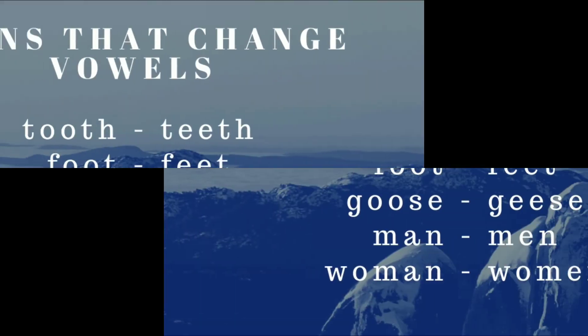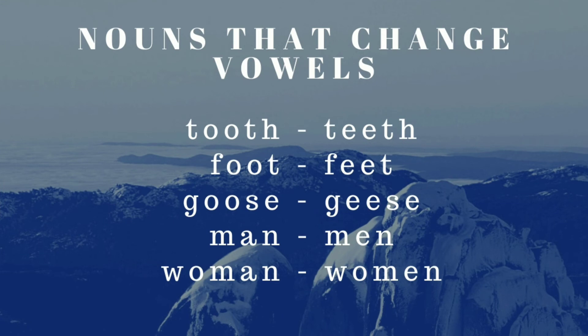Some nouns change their vowel to form the plural. For example, tooth — T-O-O-T-H — becomes teeth. Foot becomes feet. Goose becomes geese. Man becomes men. Woman becomes women.